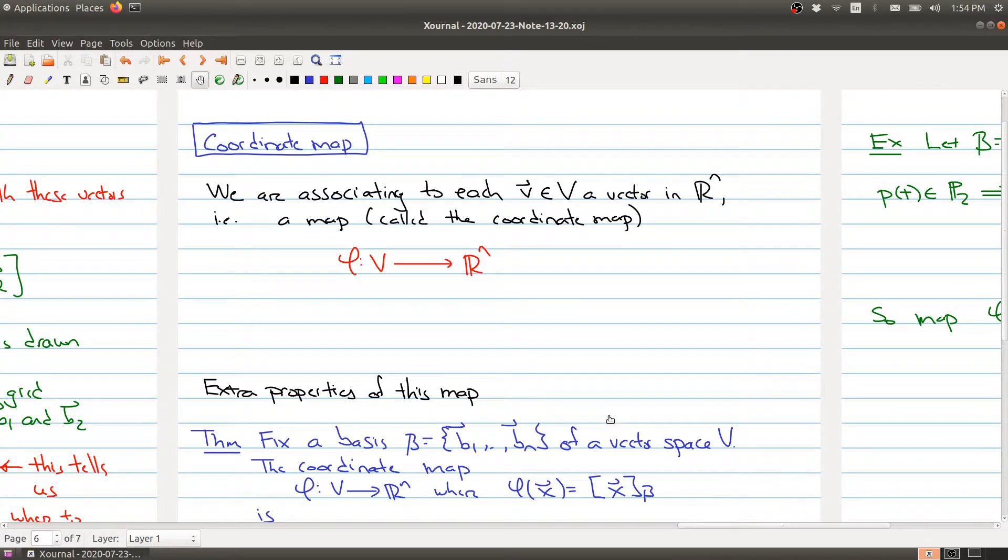So in the final part of our talk today, I want to talk to you about the coordinate map that is kind of hiding in the background in what we've been talking about. Another way of looking at what we're doing is we're taking a vector v inside of our vector space and we're associating to that vector a new vector in R^n. This map is called the coordinate map, and the way that this map works is that we're taking a vector inside of our vector space and we map it over to the b coordinate.